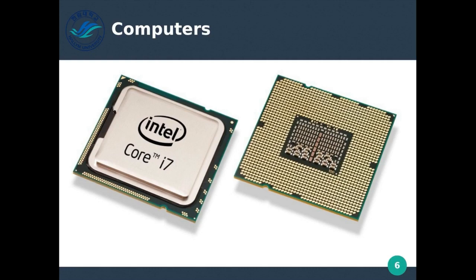All of the data in the computer needs calculations to determine what we should do with that data. For example, to even show the mouse on the screen, the processing unit is processing data and outputting a command to the video card. The central processing unit is like a calculator that does all of the calculations and sends that output through a bus.